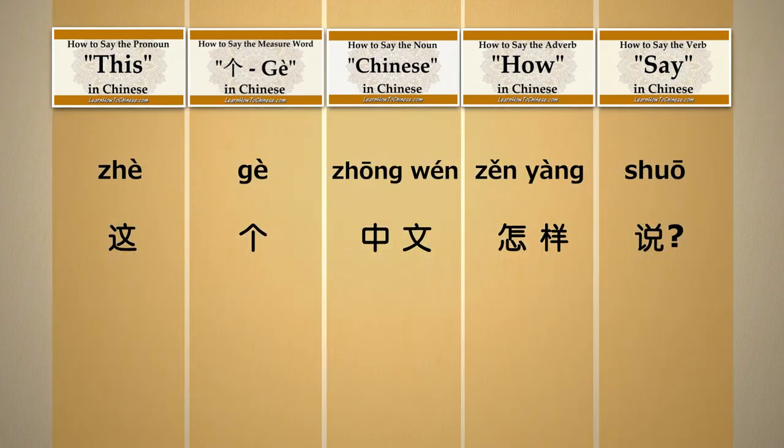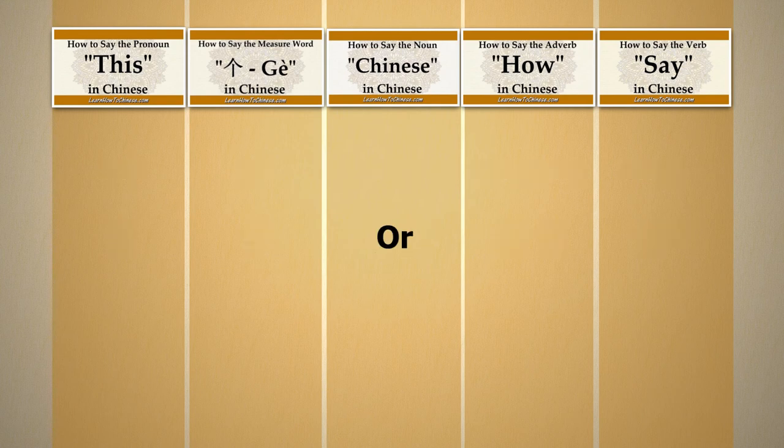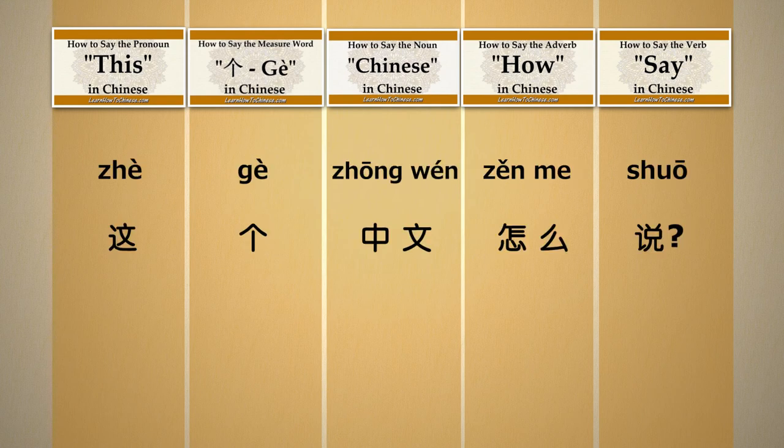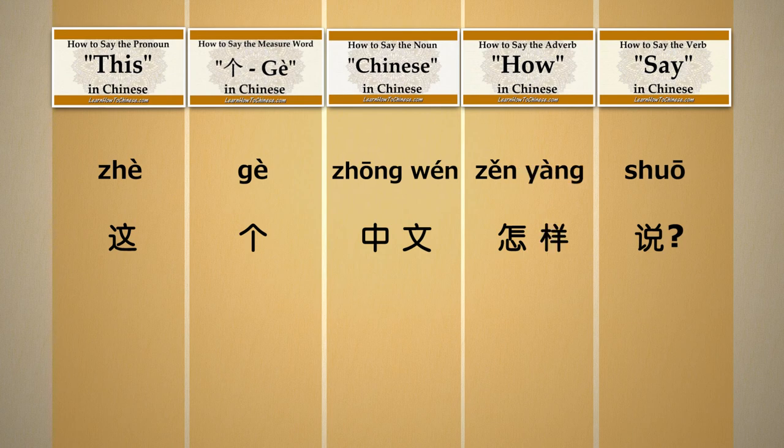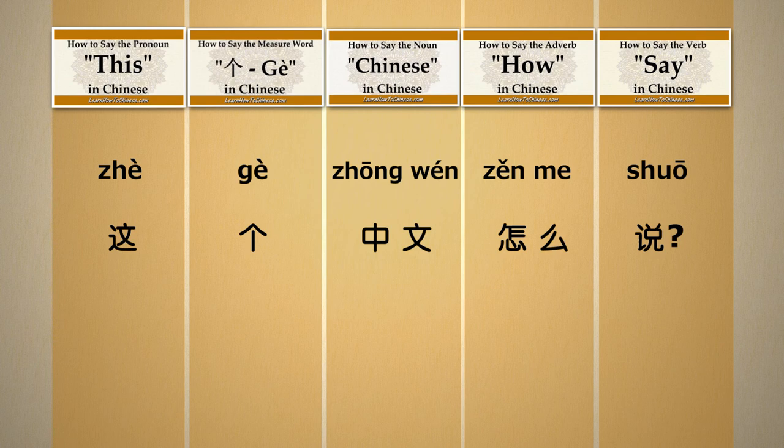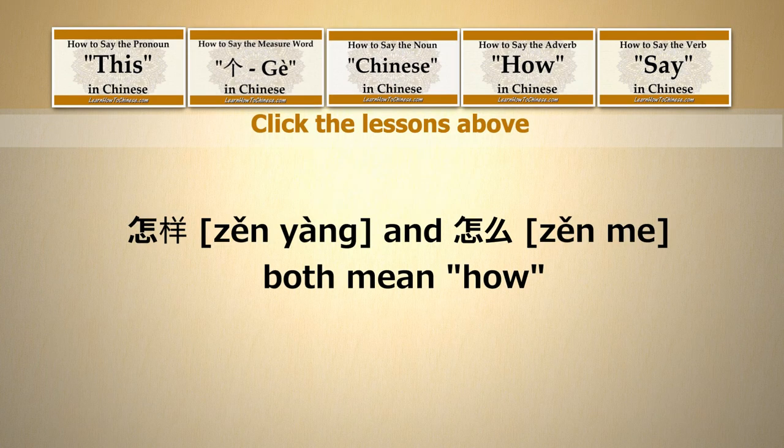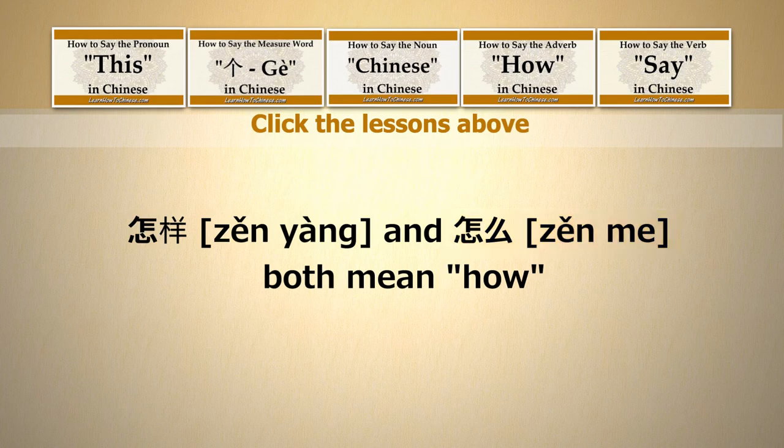Now you have the question. 这个中文怎样说. Or, you may say 这个中文怎么说. 怎样 and 怎么 both mean how. They both are correct. And I normally use 怎么 without even realizing it.